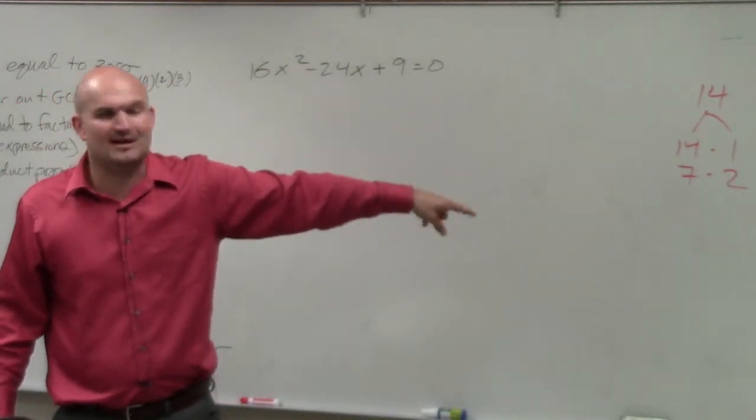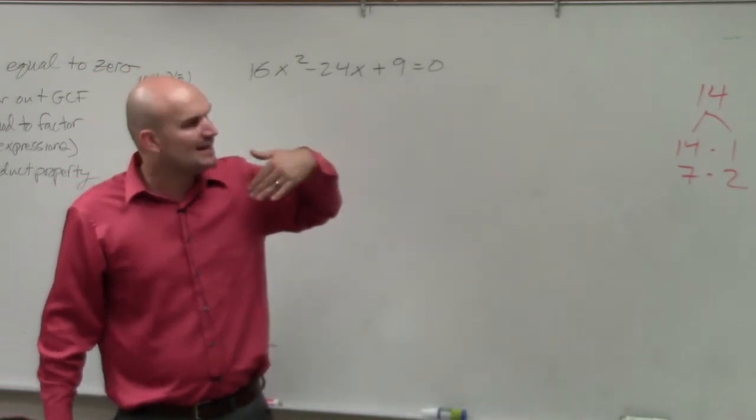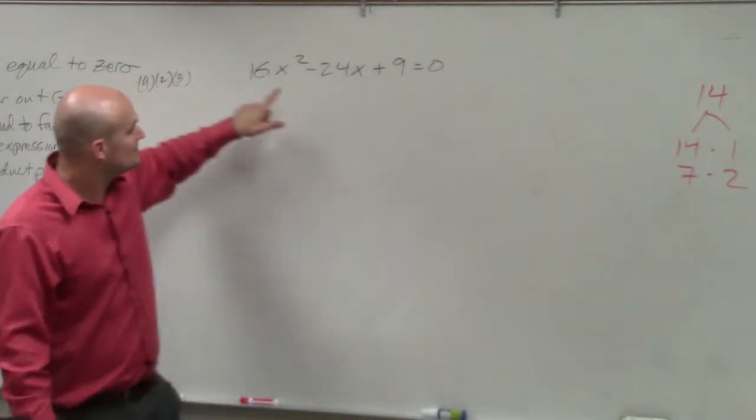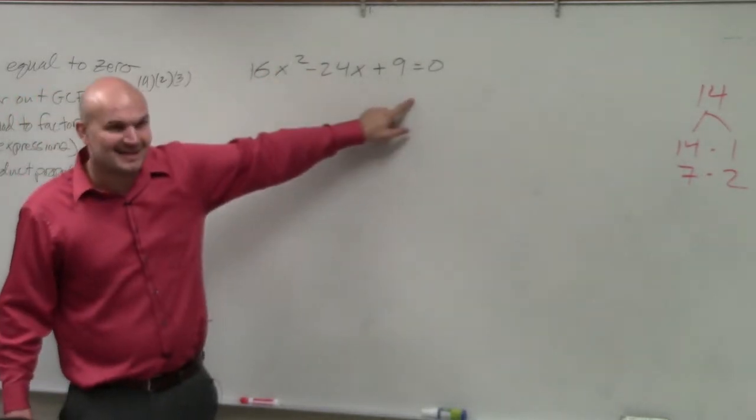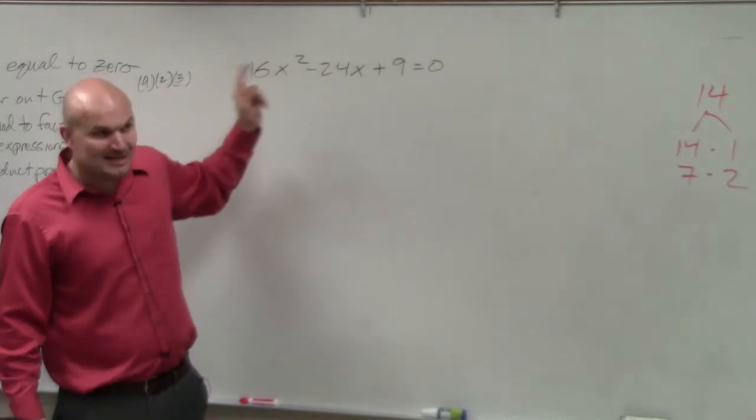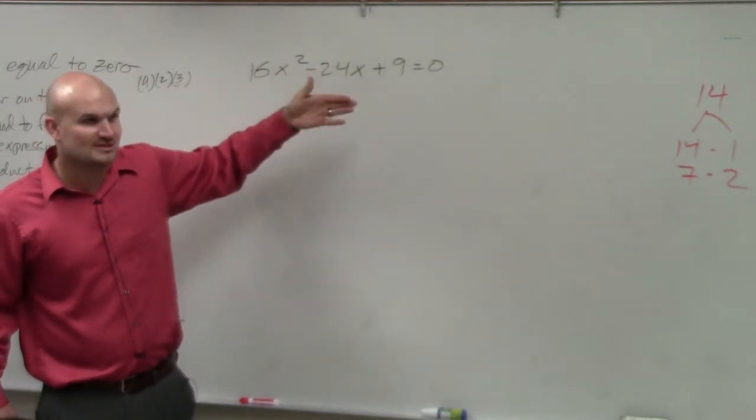That took me eight minutes to go through that. Obviously, I was explaining everything. But that took a long time, right? So if we had any way that we could expedite this, because to do it that way, we'd have to multiply 16 times 9 and then find the two numbers that multiply to give you that, but then add to give you negative 24. Does anybody see where I'm going with this? That could take a while.